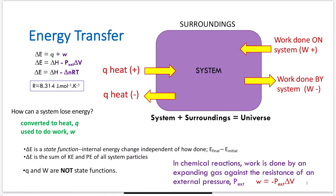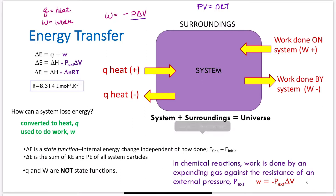Energy transfer: the change in energy equals q plus w. Work is also equal to −PΔV. Using the ideal gas law, PV = nRT, we can substitute to get w = −ΔnRT at constant pressure. The gas constant here is 8.314 J/mol·K because we are dealing with energy.